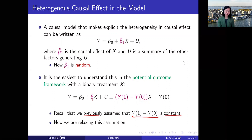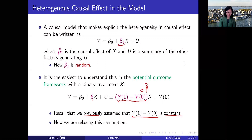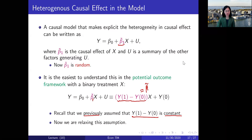Now let's not make that assumption. We allow y₁ minus y₀ to be random and call that β̃₁ — the treatment effect — allowing it to be different for different people in the population, just as x or y can be different for different people.